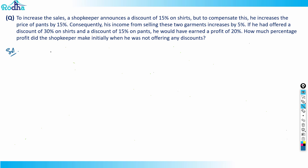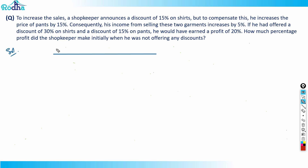This question is a good application of the allegation method. On one side we put shirts — he's giving a discount of 15 percent, so that's minus 15 percent. On the other side, for pants, he increases the price by 15 percent. Both discounts and price increases apply on the mark price. The combined effect — his income from selling these two garments increases by plus 5 percent.